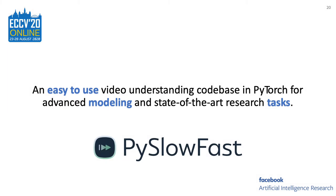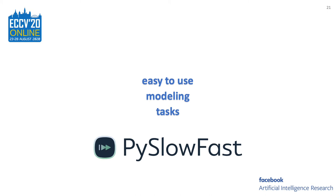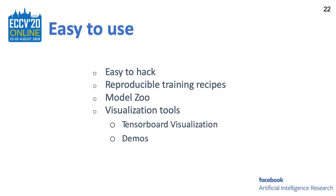Now, getting back to discussing more details about the PySlowFast codebase — it is an easy-to-use video understanding codebase in PyTorch for advanced modeling and state-of-the-art research tasks. We can break this into three keywords: easy-to-use, modeling, and tasks. In the following presentation, I will visit these three keywords in order. First, we want to discuss easy-to-use.